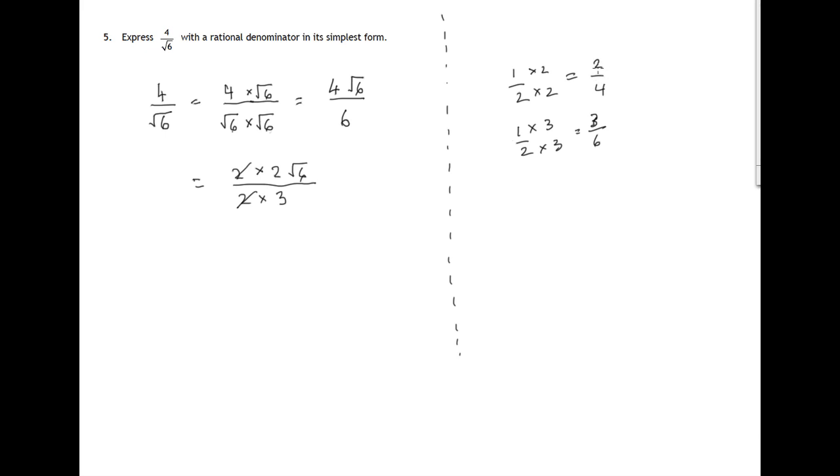And again we're allowed to divide top and bottom of a fraction. For instance, here by 2 to get 1 over 2 and here by 3 to get 1 over 2. We're allowed to do that. It's called canceling.